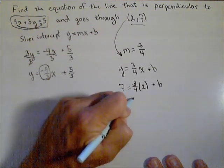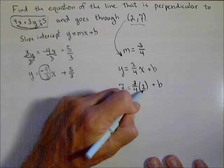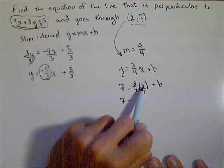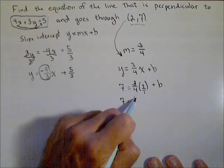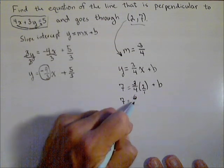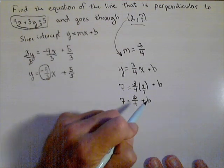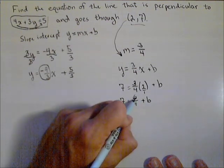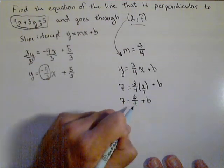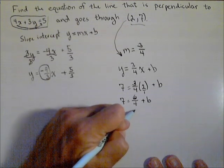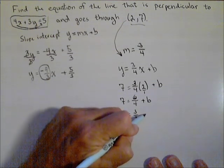So we have 7 equals, we can think of this as 2 over 1 for multiplying fractions. So we have 3 times 2, which is 6, and 4 times 1, which is 4, plus b. We can also reduce that to make this a smaller fraction. So that's 3 halves plus b.